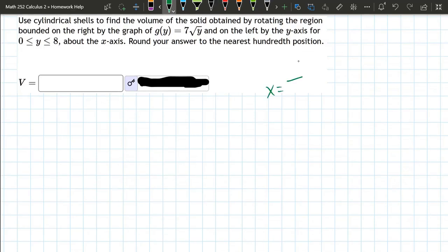We have a 7√y function and that is g(y). So it's a function of y, x = 7√y. There may be a reason they gave it to us as a function of y instead of a function of x.